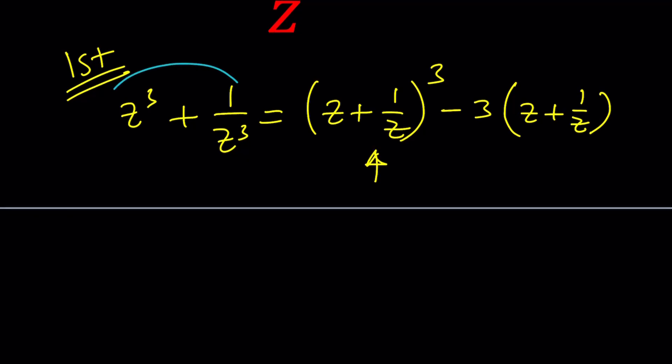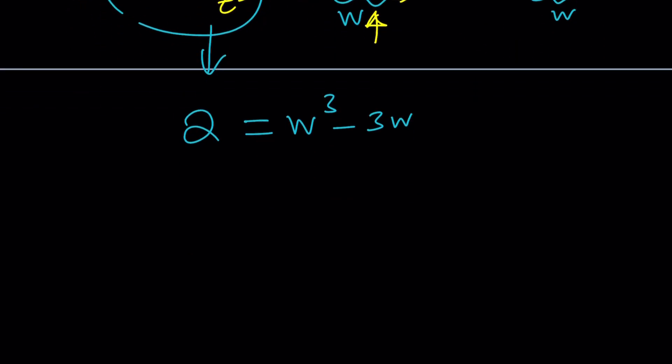First of all, we know that this is equal to 2. Now we can go ahead and call this something. Let's call it omega. Omega cubed minus 3 omega is equal to this. And what does that mean? It just means that this is a cubic equation. And guess what? It's somewhat special. Because if you look at the coefficients, the sum of the coefficients isn't 0. But I notice 1 and negative 3 added together.